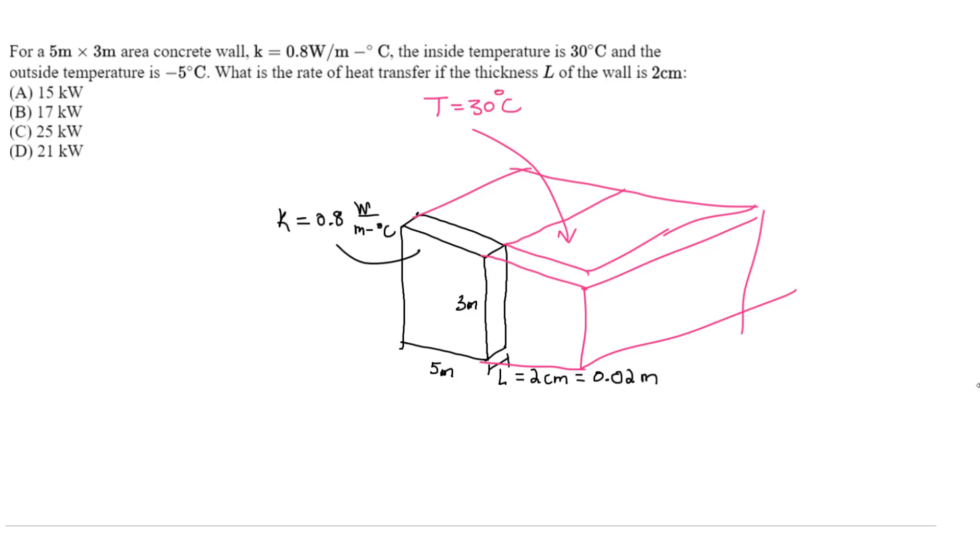We're told the inside temperature, so the temperature inside here is going to be 30 degrees Celsius. And the outside temperature, the temperature coming in from the outside is going to be negative 5 degrees Celsius. So we want to find the rate of heat transfer.